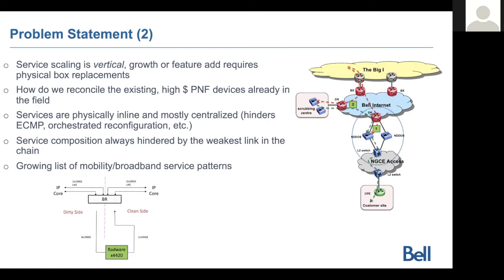In a hop-by-hop chaining model, service composition will always be limited by the weakest link in the chain. A given traffic pattern may need to go through A to B to C, but maybe only one pattern needs treatment by all three functions. Because they are connected one by one, every box in the chain must support the full load of traffic — not necessarily only the portion relevant to it.